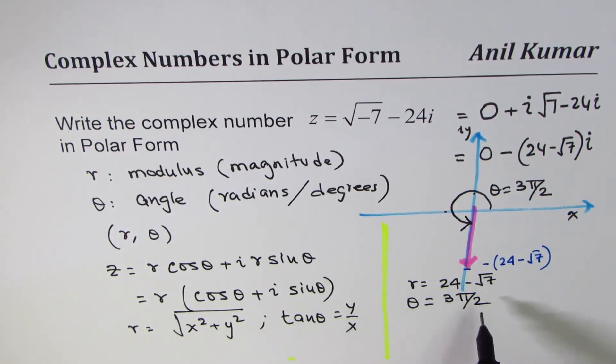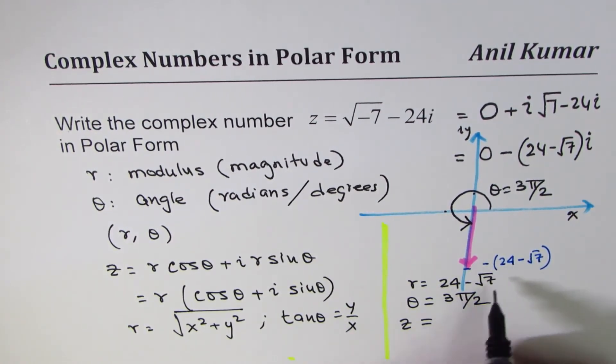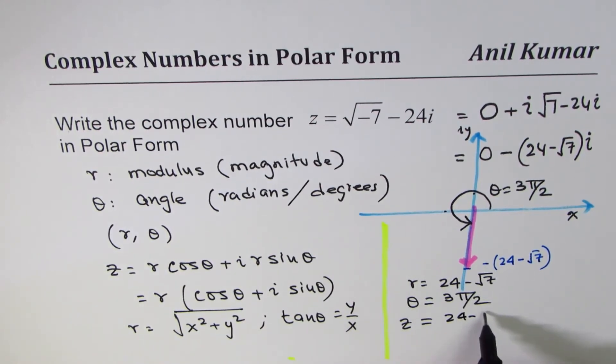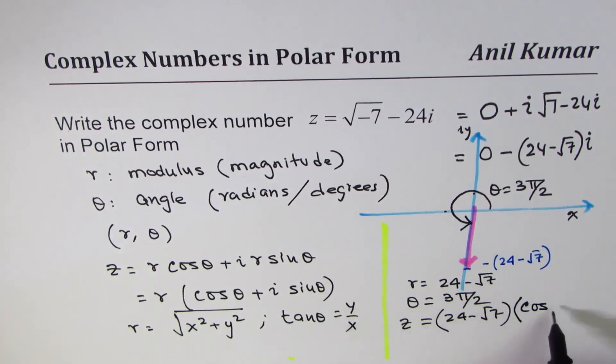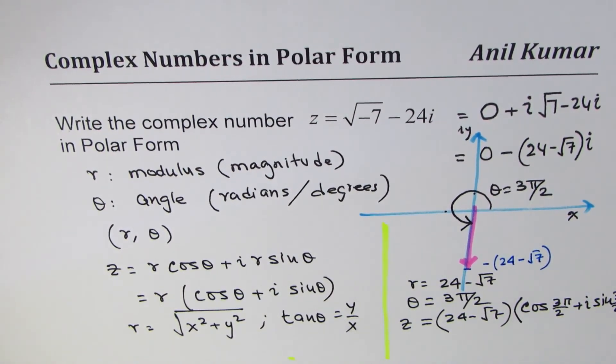That is how we can write this in complex form. We can write z equals the r value, which is (24 minus square root 7), times cos of 3π/2 plus i sin 3π/2. That's how you write the given complex number.